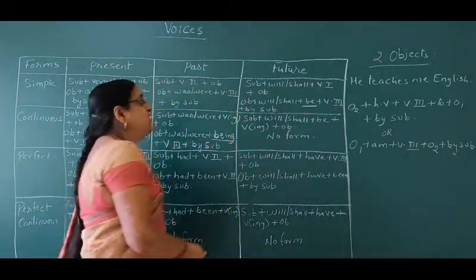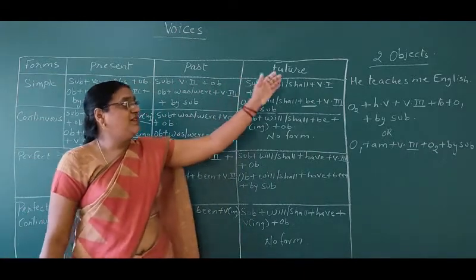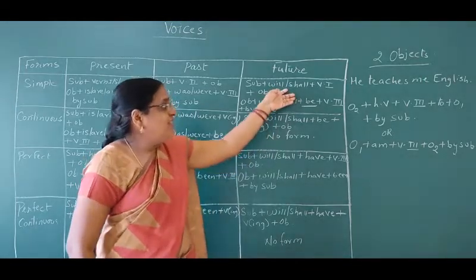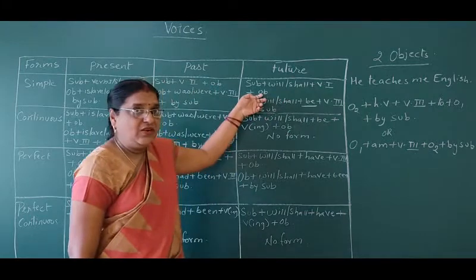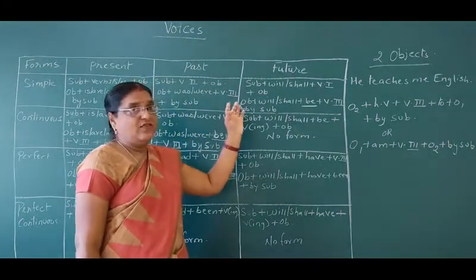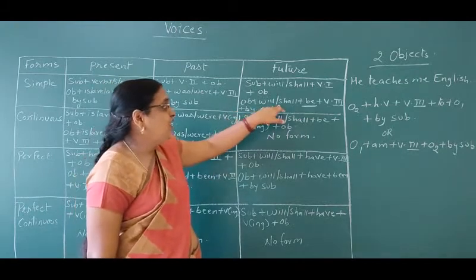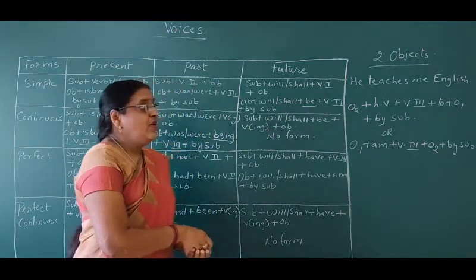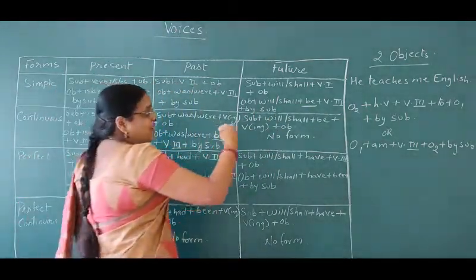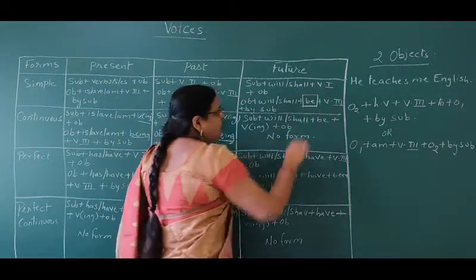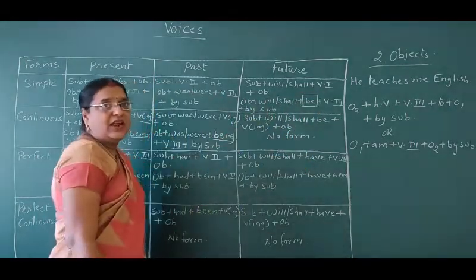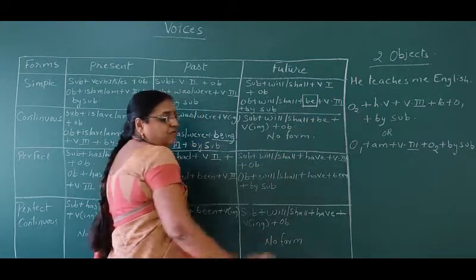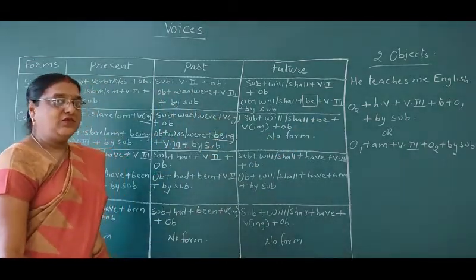Now let's move on to the future tense. In active voice: subject plus 'will' plus the first form of the verb plus object. In passive voice, it becomes: object plus 'will' plus 'be' plus the third form of the verb plus 'by' and the subject. So in the simple future tense, we use 'be' along with 'will' and the third form of the verb.